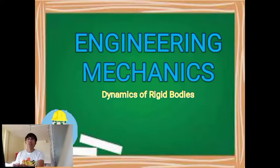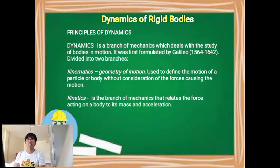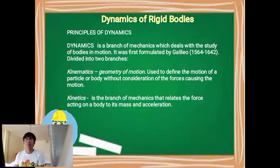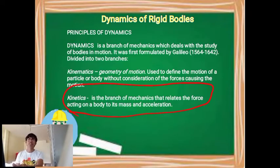To start, we have here the principles of dynamics. Dynamics is a branch of mechanics which deals with the study of bodies in motion. It was first formulated by Galileo in the year 1564 to 1642. It is divided into two branches: kinematics and kinetics. Kinematics is the geometry of motion used to define the motion of a particle or body without consideration of the forces causing the motion. Kinetics is the branch of mechanics that relates the force acting on a body to its mass and acceleration.